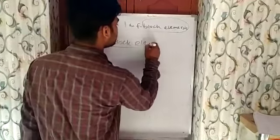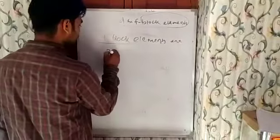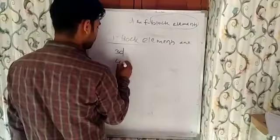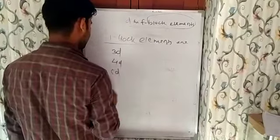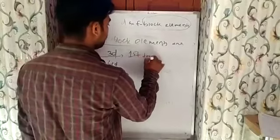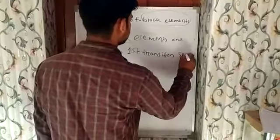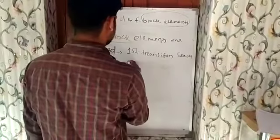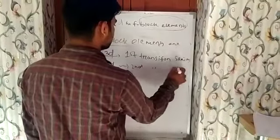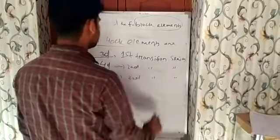D block elements are 3D, 4D, and 5D. That means first transition series, that is 3D; second transition series, that is 4D; third transition series, that is 5D.